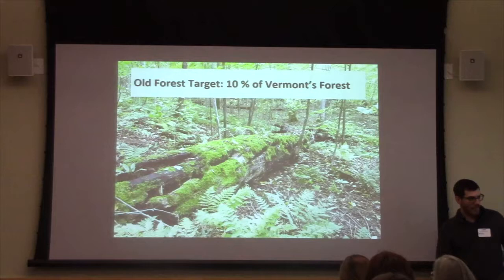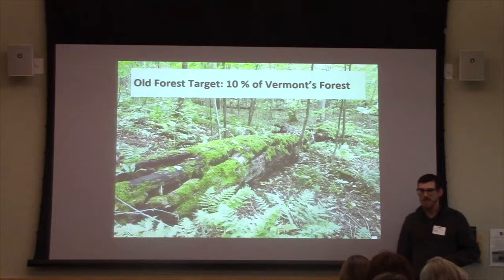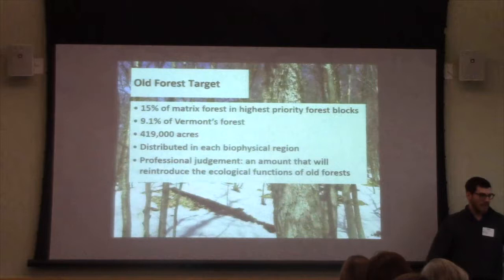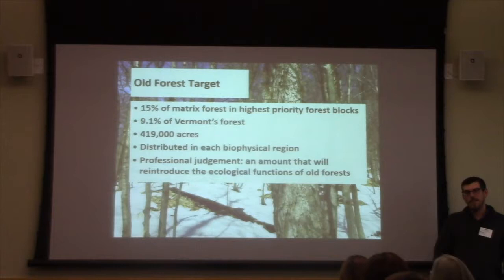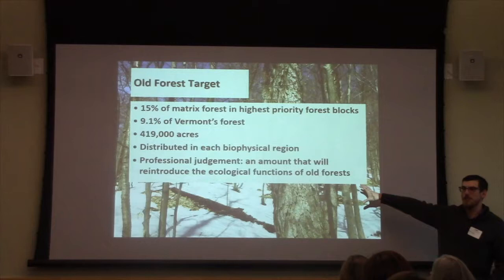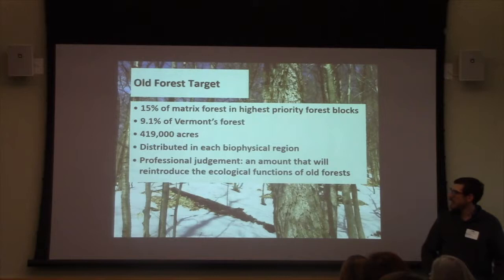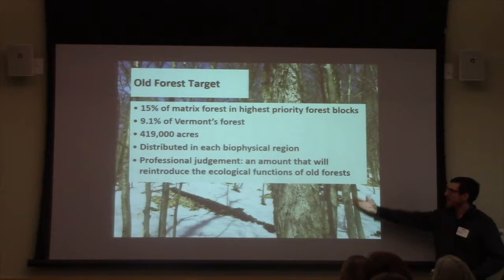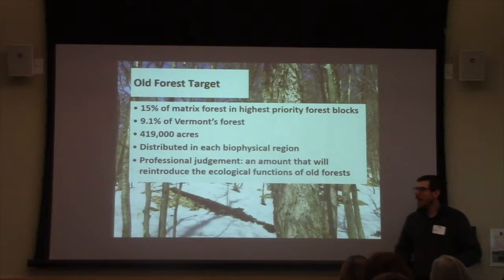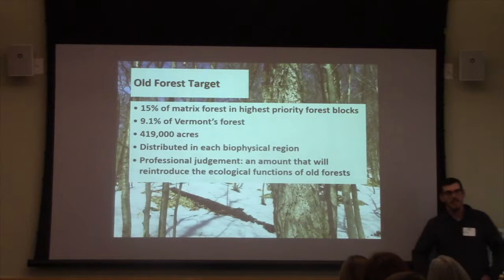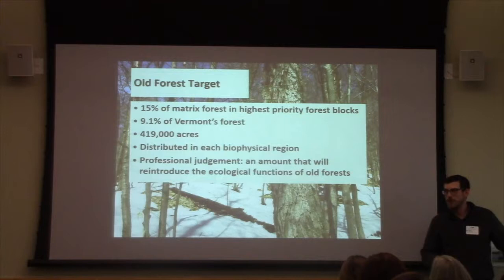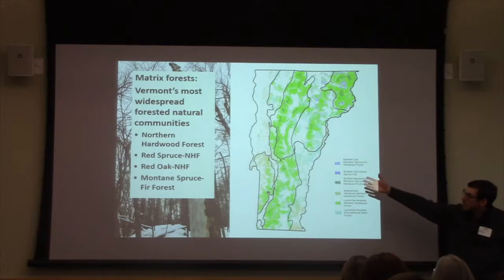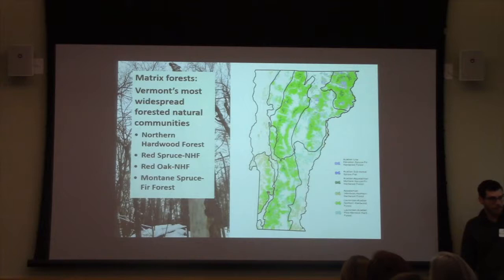The old forest target is about 10% of Vermont's forests — that's the easy number to remember. More precisely, it's 15% of the matrix forests — these widespread forests in that set of forest blocks — which works out to about 419,000 acres distributed around the state. How did we get there? It's professional judgment: we wanted to reintroduce those functions on the landscape in an amount substantial enough to bring those functions back but also achievable. Luckily, it's consistent with efforts like the Harvard Forest Wildlands and Woodlands Project, which independently arrived at the same 10% number.